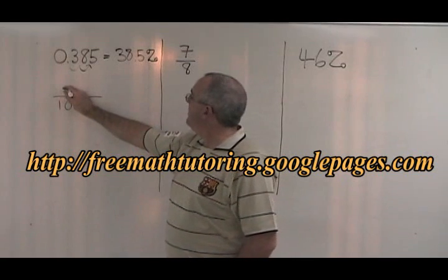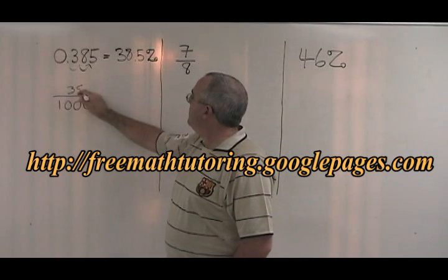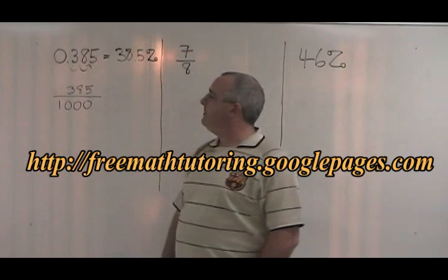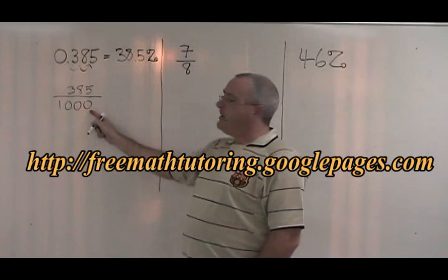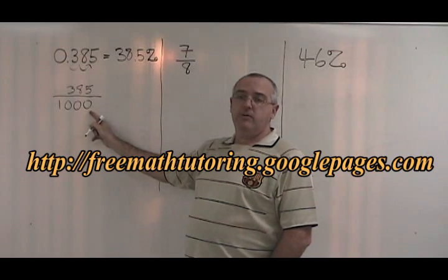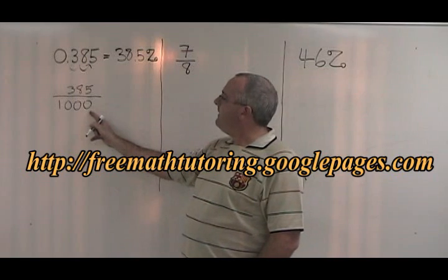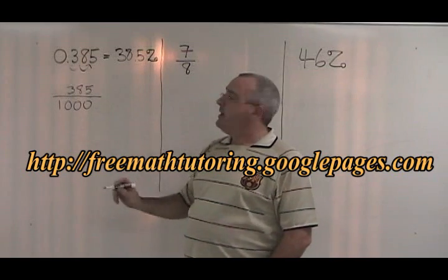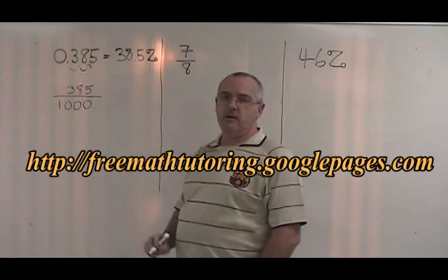On top, we put the number 385. This is now a fraction, but we should reduce it. We look for a common factor between the top and the bottom, and I can see that these are going to have a common factor of 5.